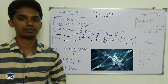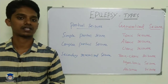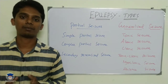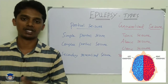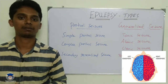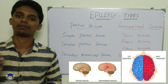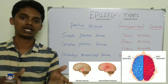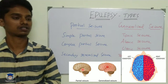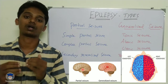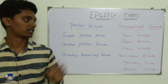Now let's talk about types of epilepsy. Epilepsy has two major categories: partial and generalized. The brain has two hemispheres — right hemisphere and left hemisphere. In a partial seizure, abnormal neuronal activity occurs in one hemisphere only. In a generalized seizure, abnormal neuronal activity occurs across the complete brain involving both hemispheres. These are the two major types of epilepsy.